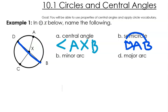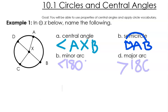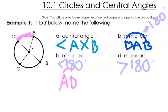Now let's look at what is a minor arc and what is a major arc. A minor arc is going to be something that is less than 180 degrees, and a major arc is going to be something that is greater than 180 degrees. A semicircle is going to be equal to 180 degrees. So when I'm looking at this picture, a minor arc can be this piece right here — something that goes less than halfway around the circle. So A, B, like that.